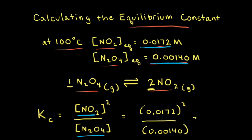When we solve this, we get that Kc is equal to 0.211 at 100 degrees Celsius. It's important to always give the temperature when reporting an equilibrium constant, because an equilibrium constant is only constant for a particular reaction at a particular temperature. It's also important to note that the equilibrium constant doesn't have any units, so we say Kc equals 0.211 at 100 degrees Celsius.